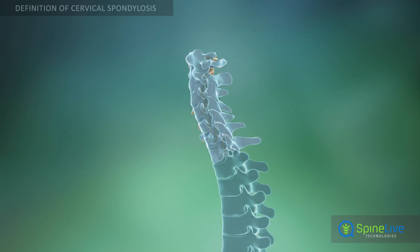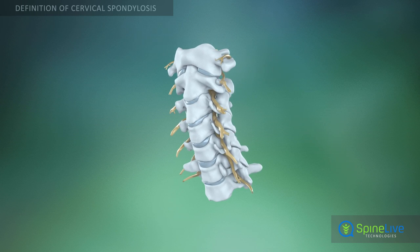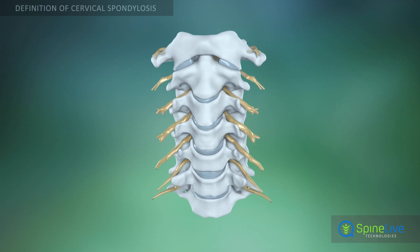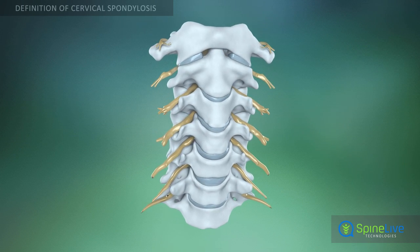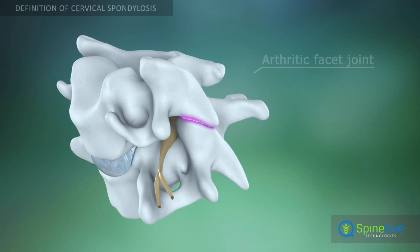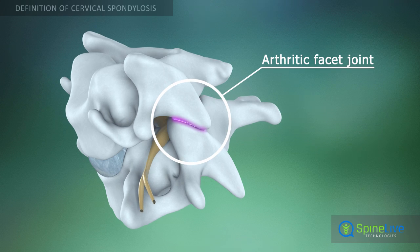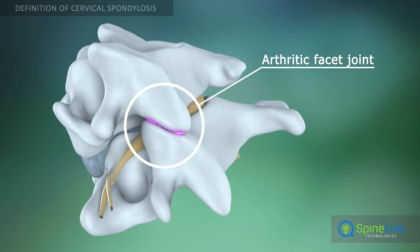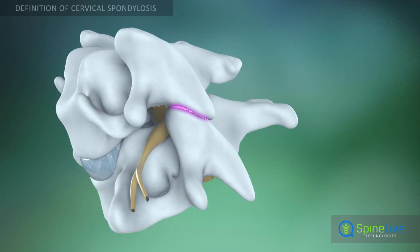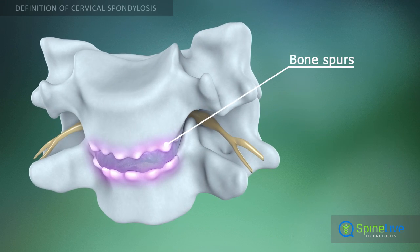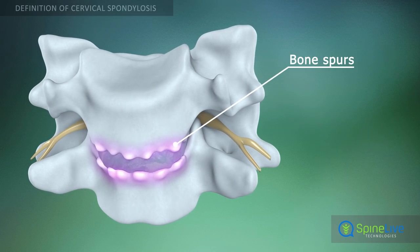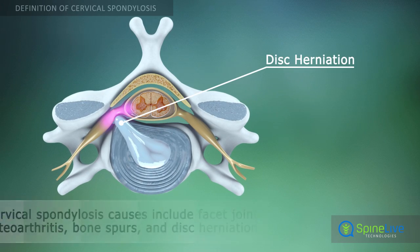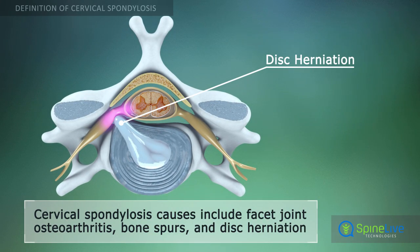Cervical spondylosis is a degenerative condition of the cervical region of the spine. This pathological condition can include facet joint osteoarthritis, bone spurs, or disc herniation.